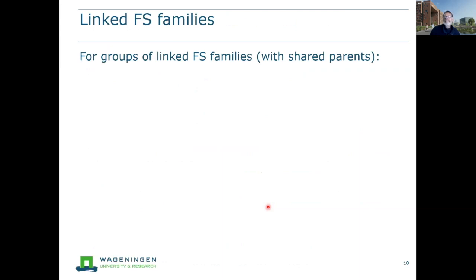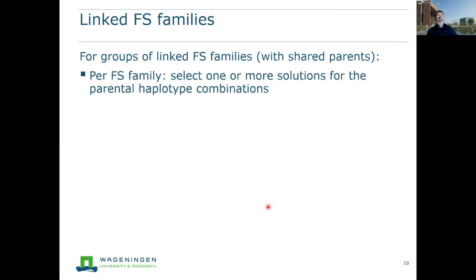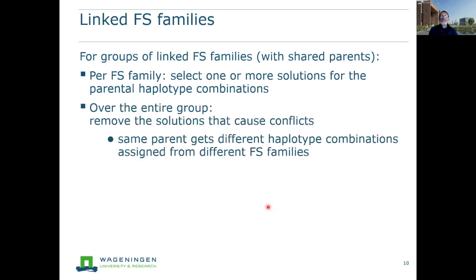There's a further level of complexity when we have groups of linked full-sib families — where multiple full-sib families share parents. In that case, we start an analysis for each full-sib family and select one or more solutions for the parental haplotype combinations. Over the entire group, we remove solutions that cause conflicts — where from one full-sib family we assume a certain genotype for a parent, but from another full-sib family we would assume a different genotype for the same parent. We eliminate those conflicting solutions and hopefully keep a set of solutions for all full-sib families that agree with each other.